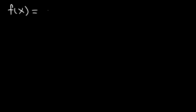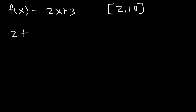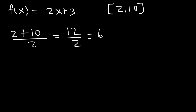Now let's say f(x) is a linear function: 2x plus 3 on the interval from 2 to 10. If you had to guess the value of C, what would you say? The midpoint of 2 and 10: 2 plus 10 is 12, divided by 2 is 6. For linear functions, the C value will be equal to the midpoint value. Let's confirm it.